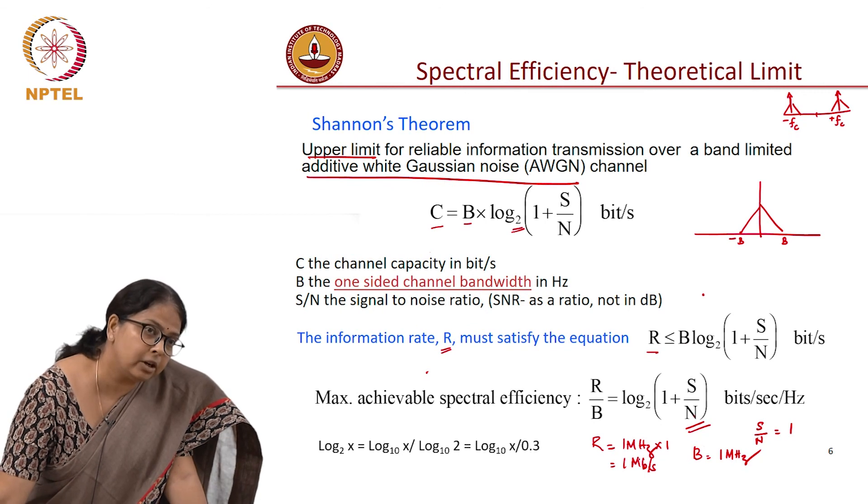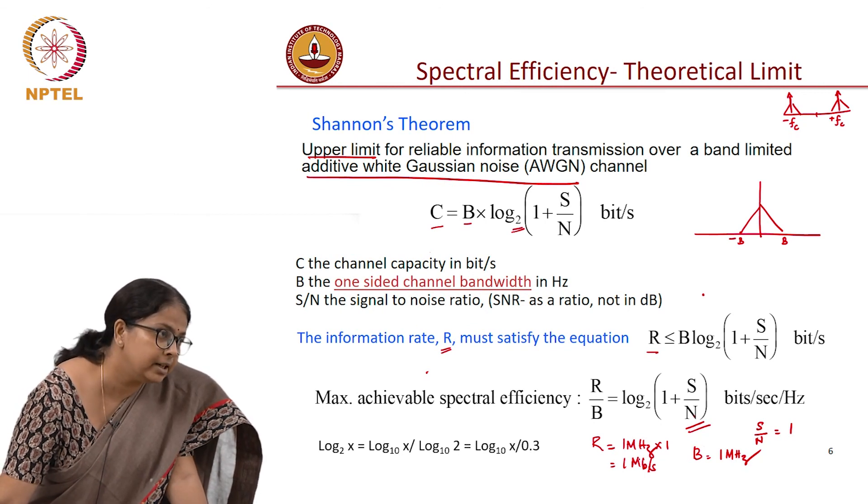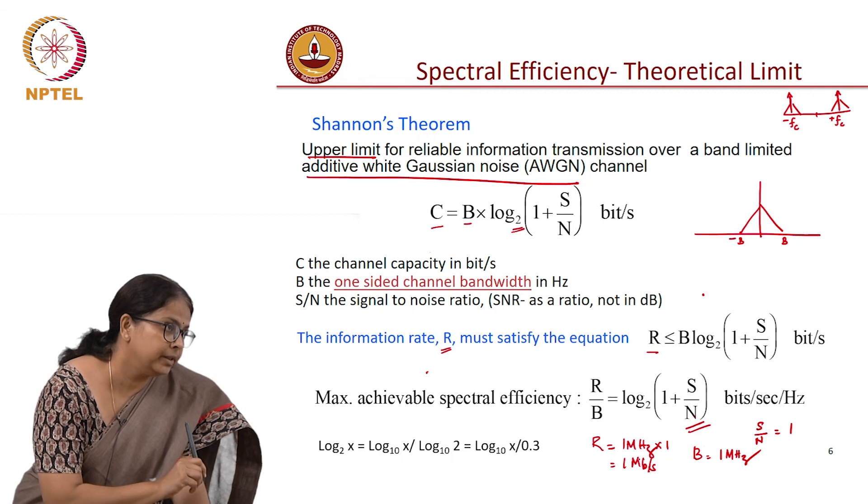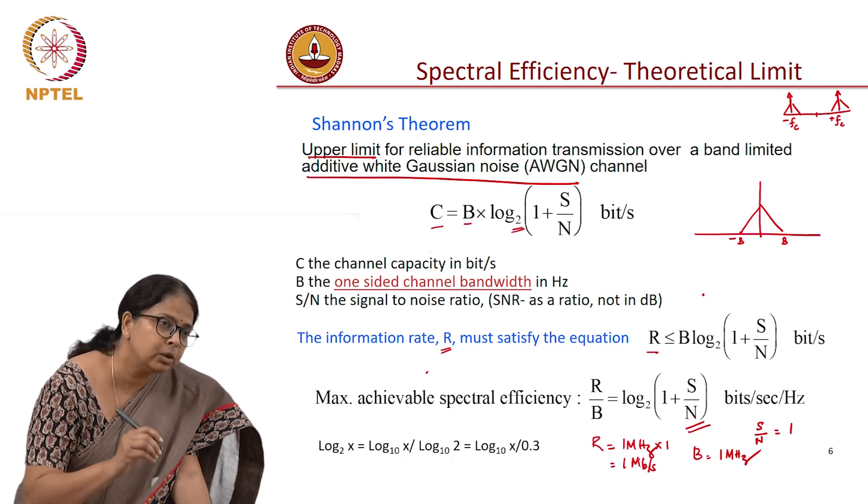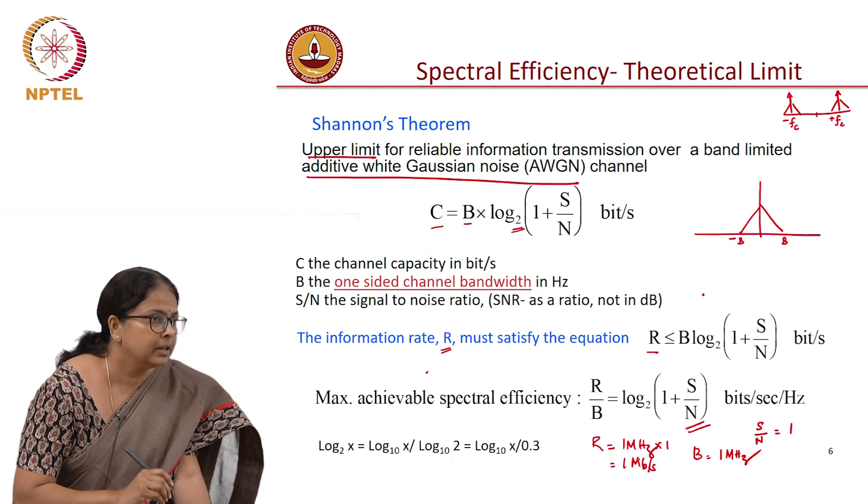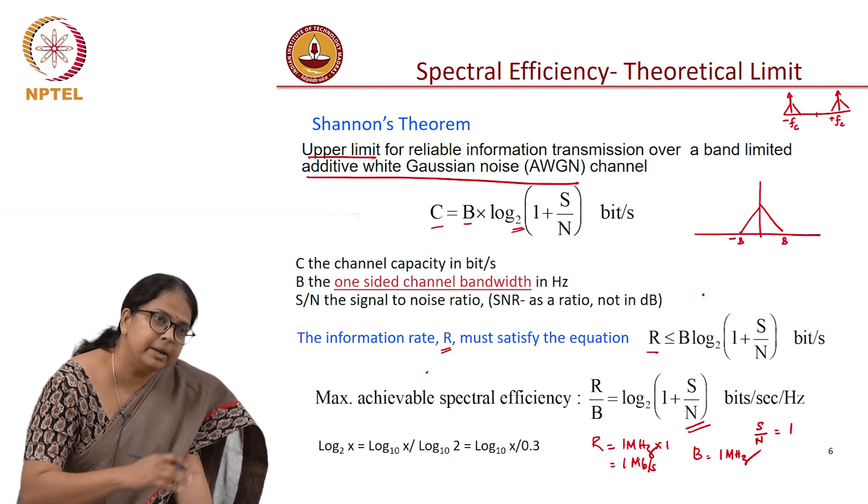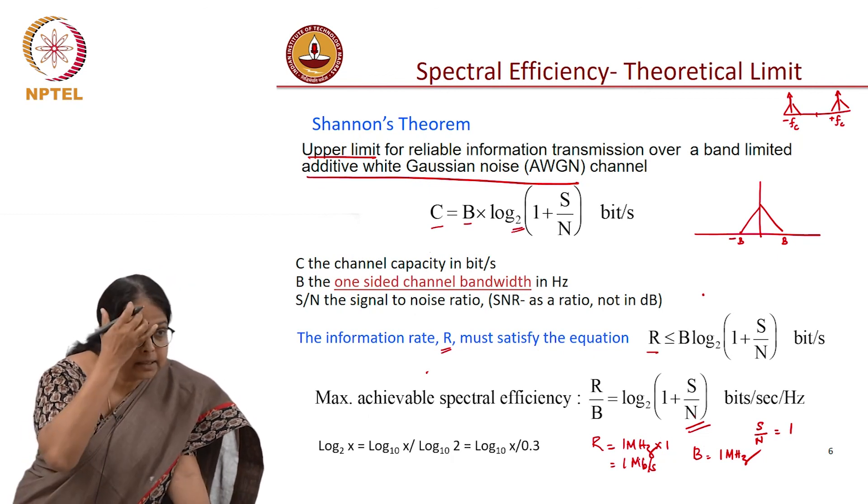Which is why whenever we talk about transmitter and receiver and channel, we need to look at two aspects of it. One, what is the bandwidth? And second, what is the noise? That decides the fundamental limiting capacity in my system.